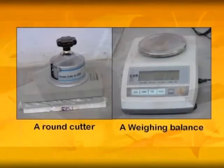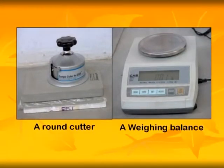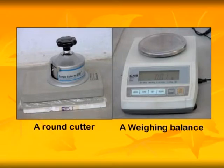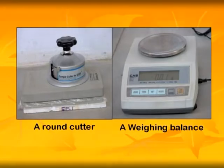A round cutter cuts a circular specimen of diameter 113.6 mm. A weighing balance is used to weigh the specimen. Round cutter and a sensitive balance.